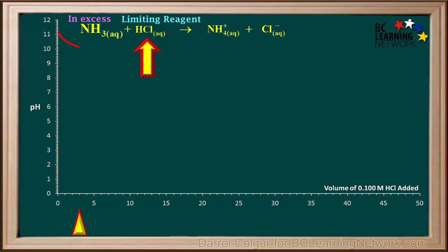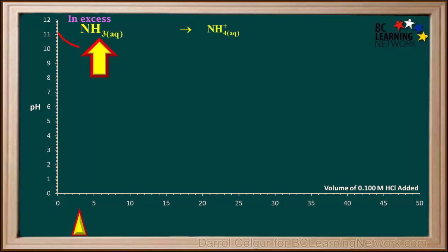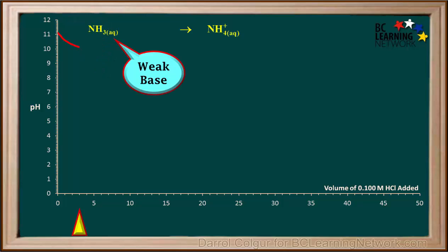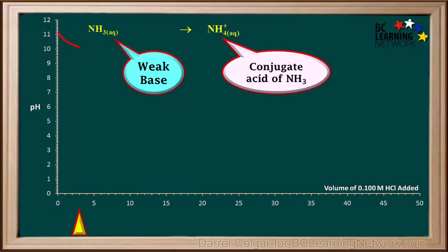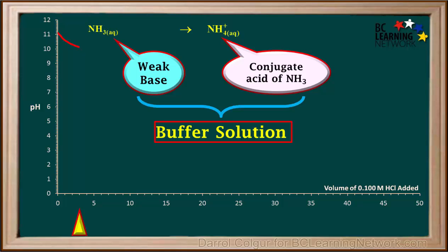Because the HCl is the limiting reagent, it will all be used up. Cl- is a spectator, so it does not affect pH, so we'll discard its formula. The HCl will react with some of the excess NH3, and we'll be left with less NH3 than we started with. So during this portion of the titration, we have some weak base left over, but we have also formed some of its conjugate acid, NH4+.